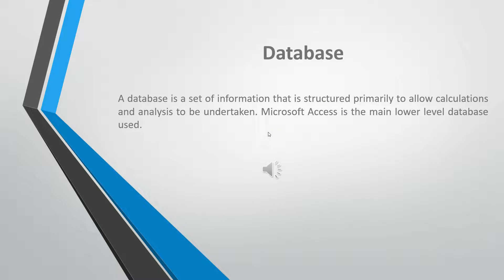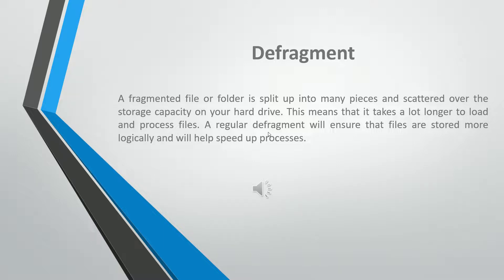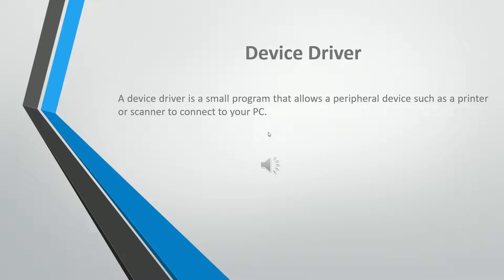A database is a set of information that is structured primarily to allow calculations and analysis to be undertaken. Microsoft Access is the main lower-level database used. A defragmented file or folder is split up into many pieces and scattered over the storage capacity on your hard drive. This means it takes a lot longer to load and process files. A regular defragment will ensure the files are stored more logically and will help speed up processes.